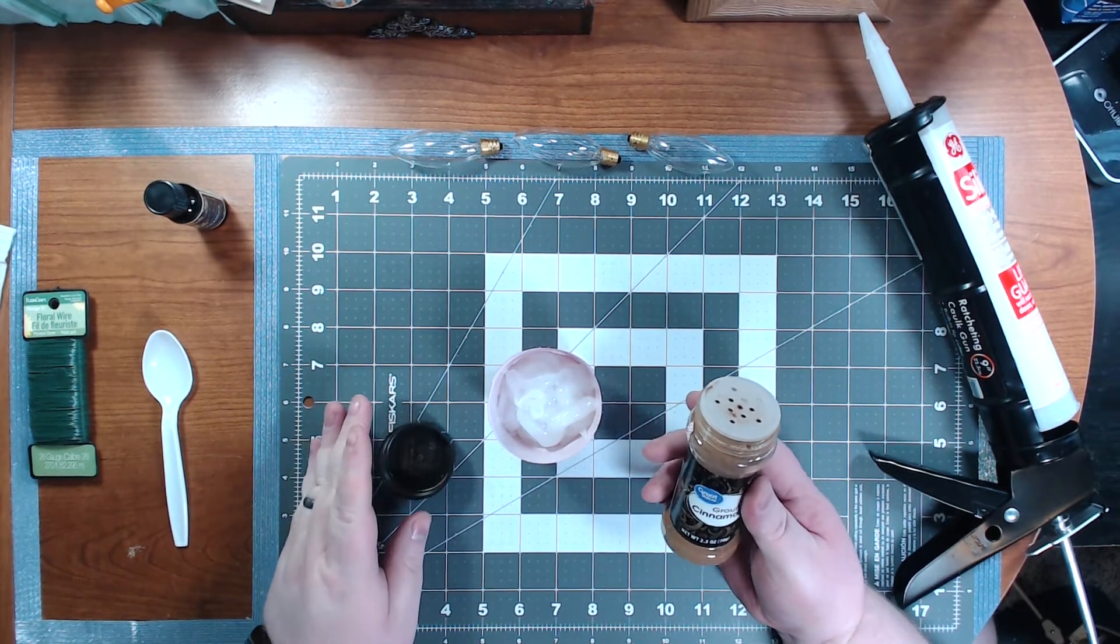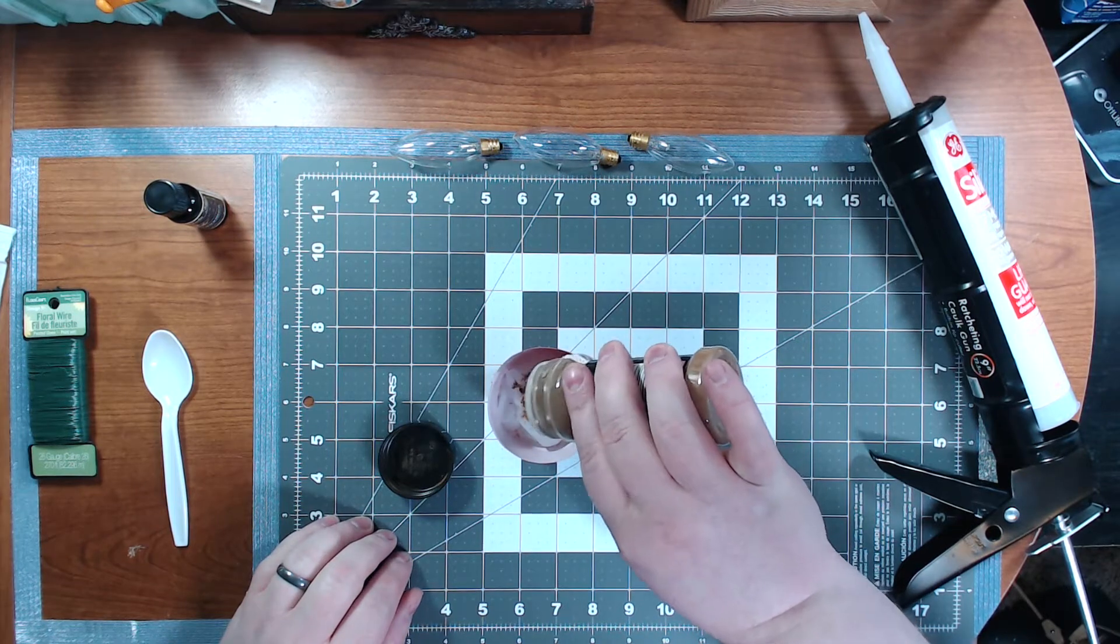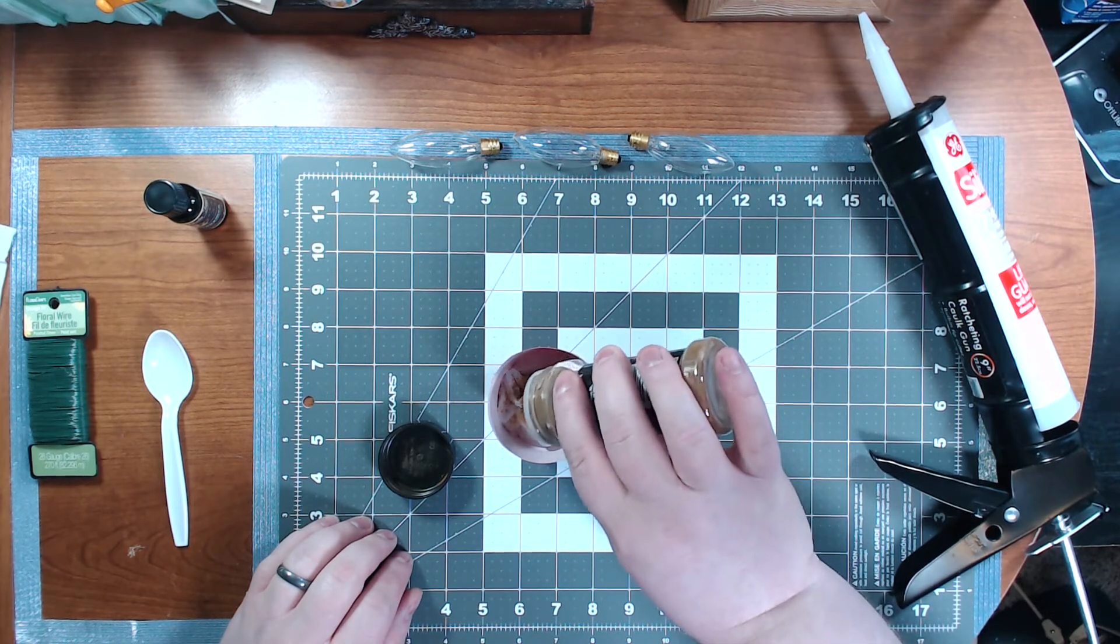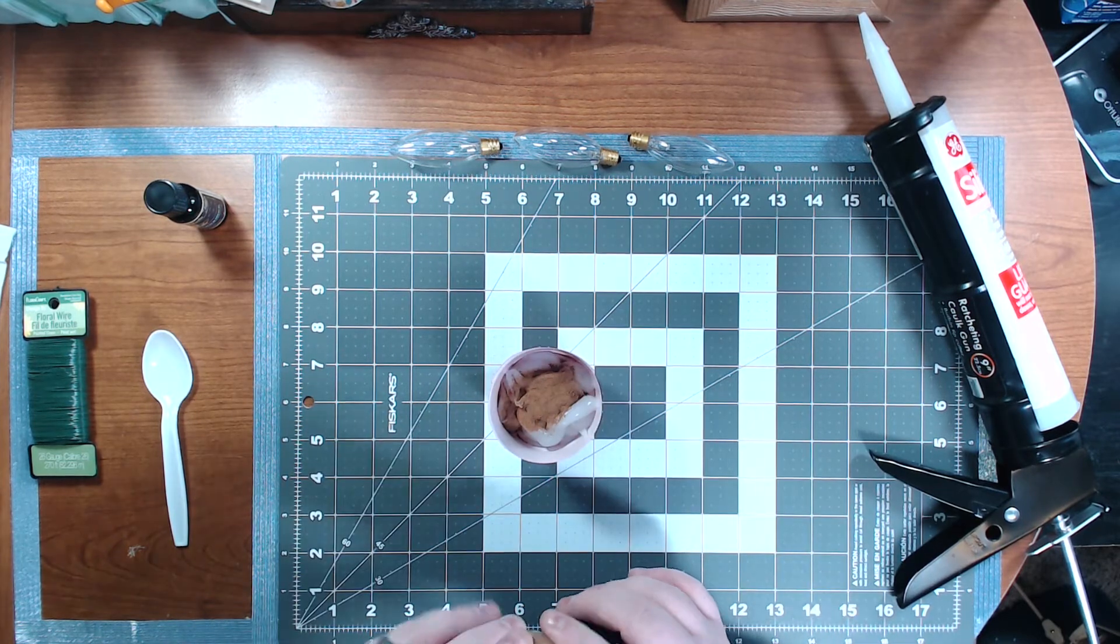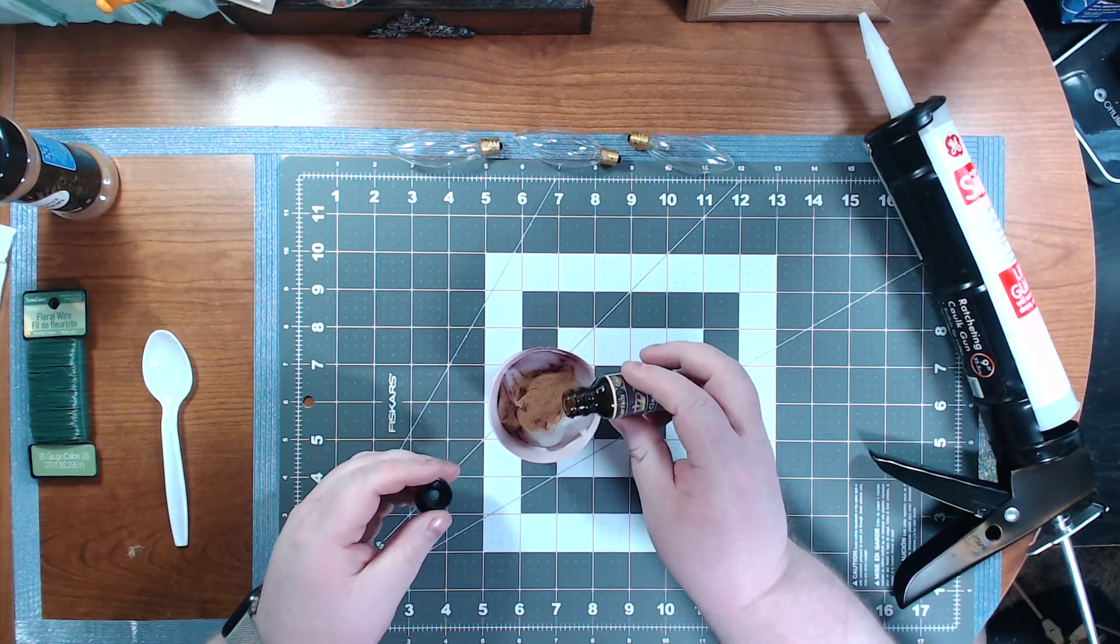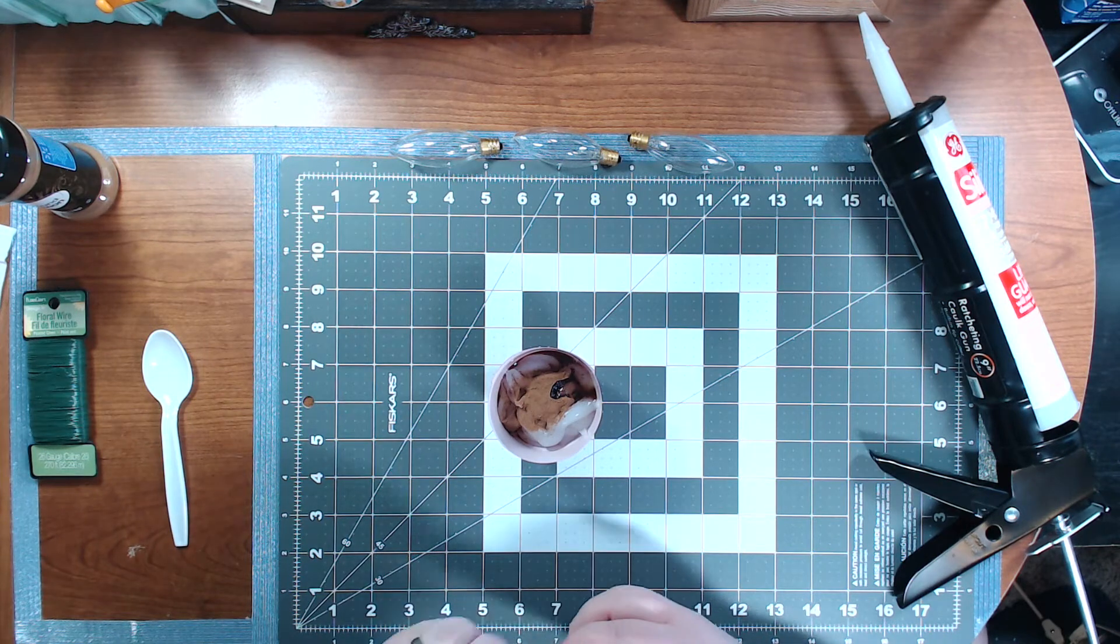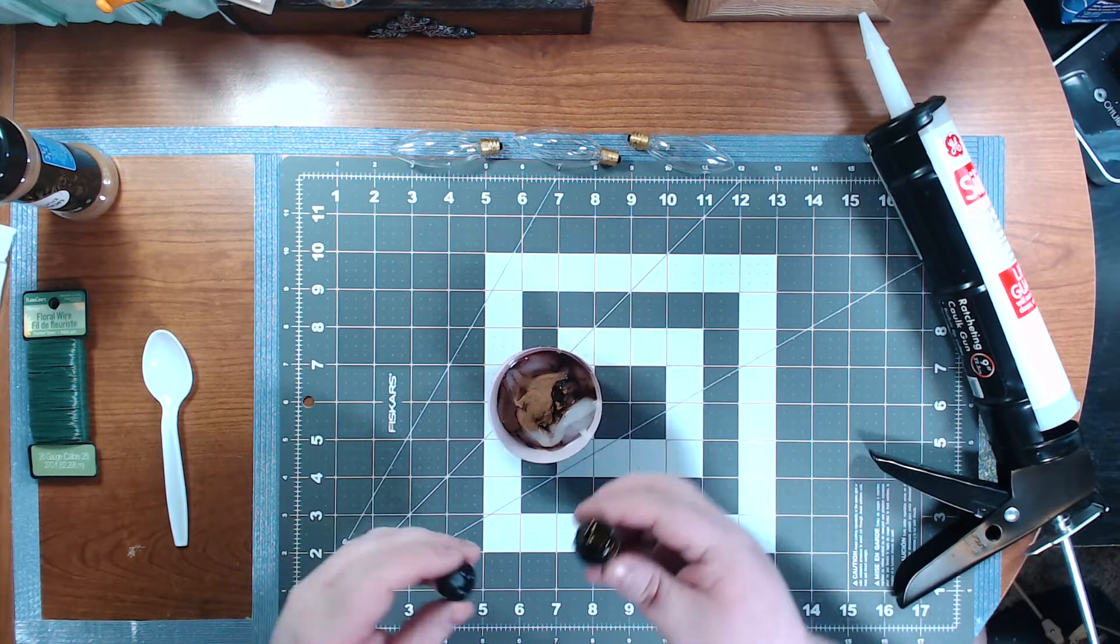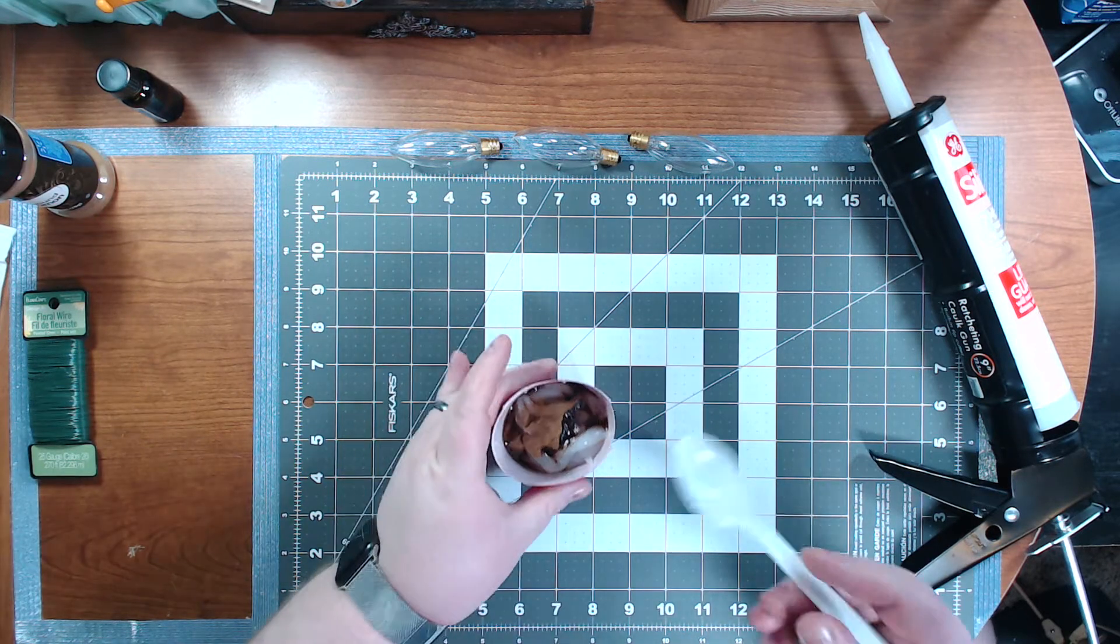Ground cinnamon, and I put probably a teaspoon maybe into it. I'm just going to guess, but if you're wanting to measure everything out, that's what I would assume this would probably be. And I would probably do about the same for the oil. And you do want to make sure you're using oil-based oils, not water.